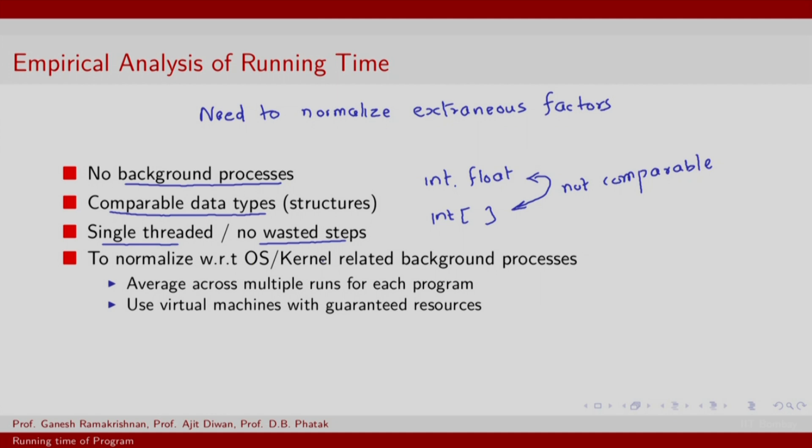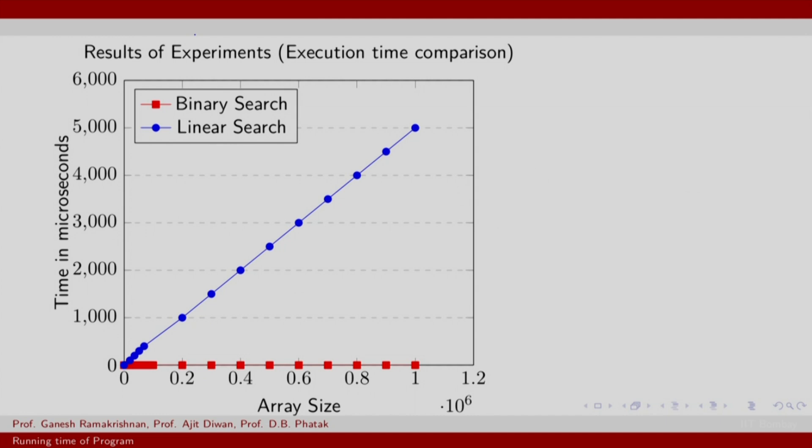Finally, you might want to compare algorithms, implementations of different algorithms. So, certainly you want to ensure that these algorithms are implemented on programs and that are in comparable languages and these programs are run on operating systems that are comparable. Even after all of this, you would not know what kind of system generated interrupts or any other extraneous factors related to temperature and so on might affect the running time of your program. So, you need to also average across multiple runs for each program. One good practice is to run virtual machines which have guaranteed resources. Obviously, you need to run these virtual machines on very high capacity servers.